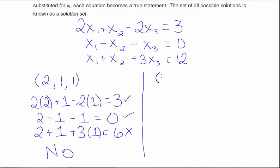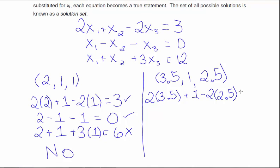Let's try again. This time, I'm going to use (3.5, 1, 2.5). So I have 2 times X1, which is 3.5, plus X2, which is 1, minus 2 times X3, which in this case is 2.5. So this is 7 plus 1 is 8, minus 5, which is 3. So that one gives a true statement.